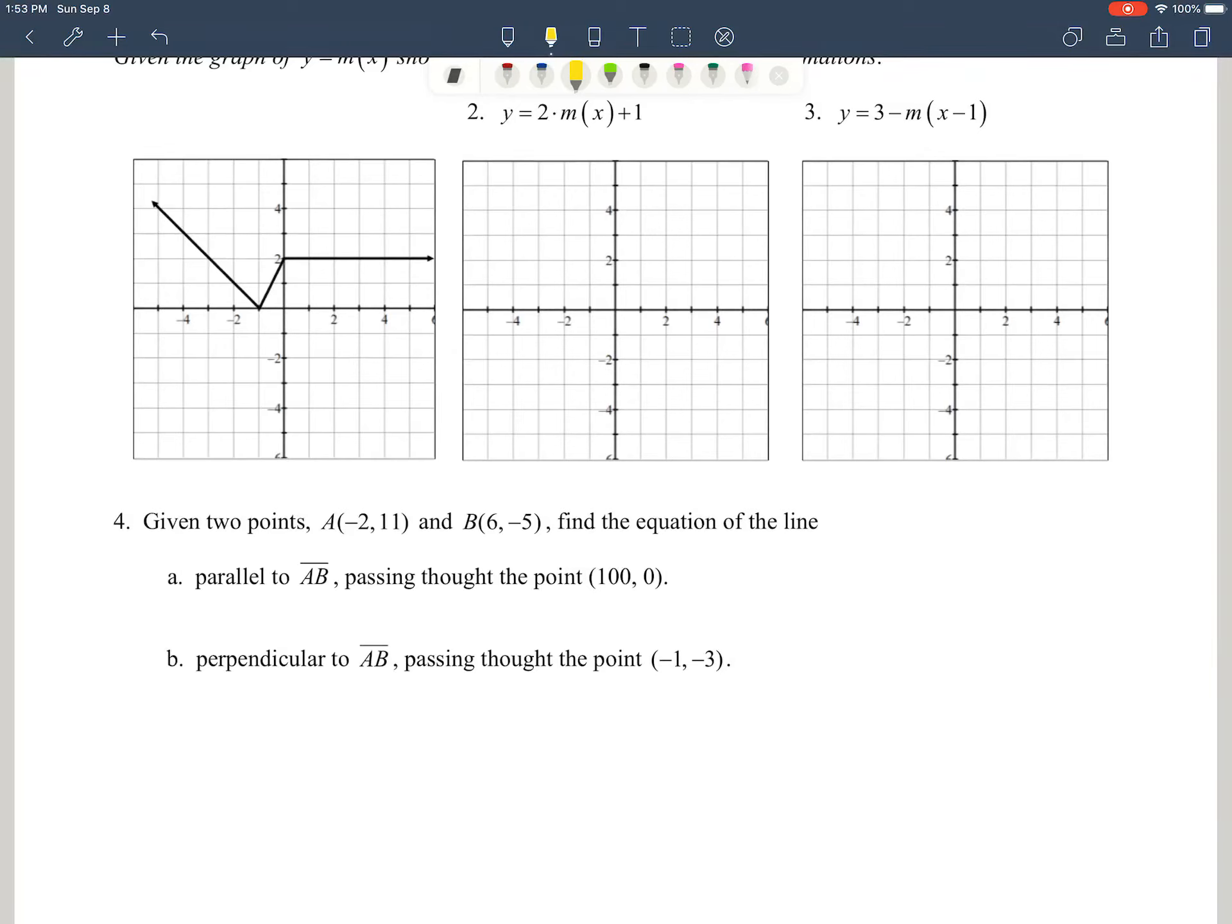All right, problem four. Given two points, we have point A at negative 2, 11 and point B at 6, negative 5. Find the equation of the line. So for letter A, we want to find a line that is parallel to line AB and passes through the point 100, 0.